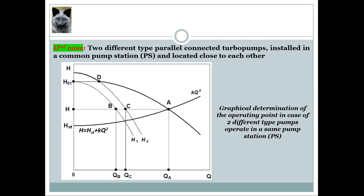The intersect points of the individual head curves of the two pumps with the pipe system resistance curve provide information about their operating modes when each pump operates separately. The starting point of the summary head curve is point D, determined by the zero flow rate of the lower head pump curve. At a head higher than HO1, only pump 2 will ensure flow rate — this is important to remember.